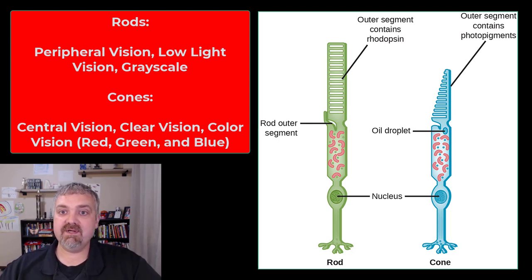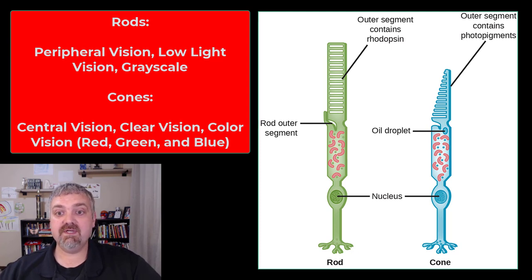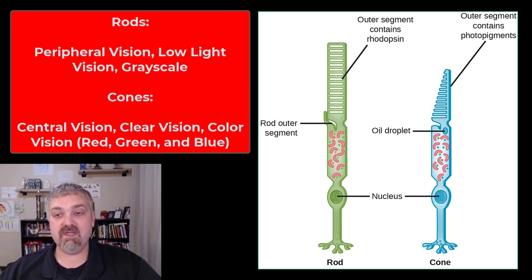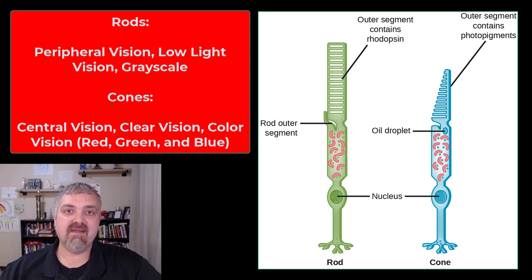Here are the photoreceptors — big picture, we have rods and cones. Rods don't take very much light to stimulate them, but they don't discern color at all. Rods see the world in grayscale and they're also not very clear. So if you're in a low-light situation, rods are critically important — they'll sense shadows and movement and diffuse edges. You can tell something's there but you're not exactly sure what it is.